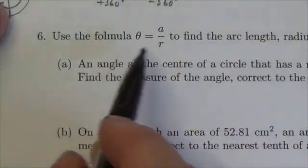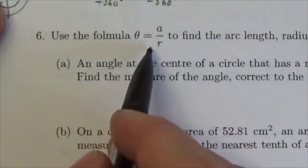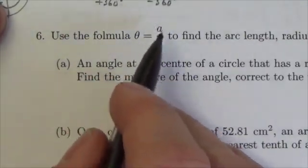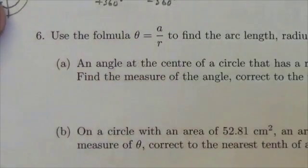In this question, we're being asked to use the formula theta equals A over R. Bear in mind, when using this formula, theta is always in radians, A is the arc length, and R is the radius.